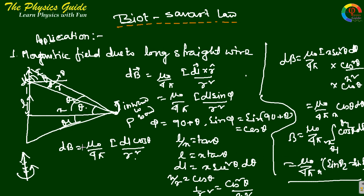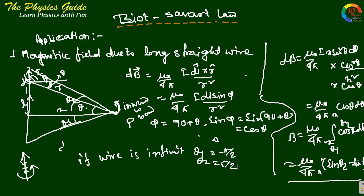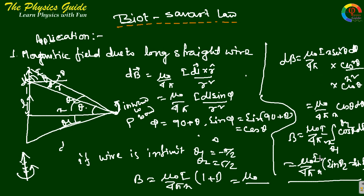For an infinite wire, θ₁ equals minus π/2 and θ₂ equals π/2. Then B equals mu₀I by 4πx times (sin(π/2) minus sin(−π/2)), which equals mu₀I by 4πx times (1 plus 1) = 2, giving B equals mu₀I by 2πx.